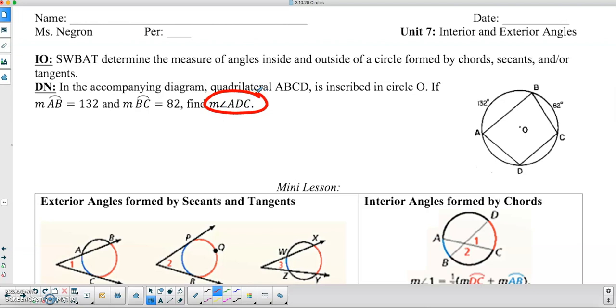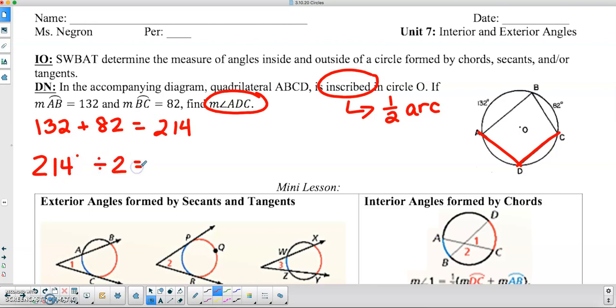So if you look here, the measure of angle ADC actually highlights both arc AB and BC. So what you're going to do is add these two arcs together. So 132 plus 82 is going to equal 214. And then because you have an inscribed angle here, this angle is actually half the measure of the arc. So what you're going to do is take your 214 degrees and divide that by 2 to find the measure of the angle, which is 107 degrees.